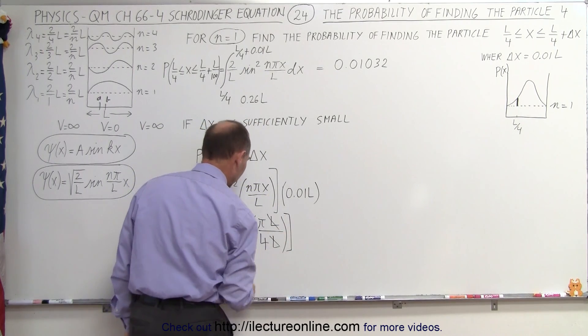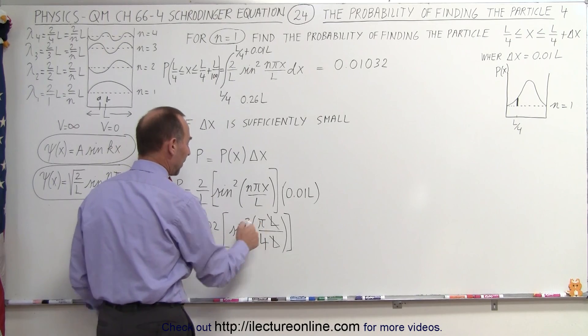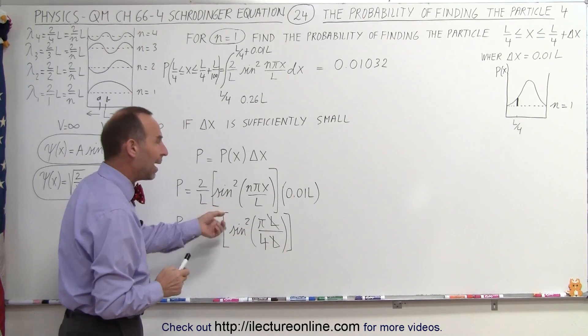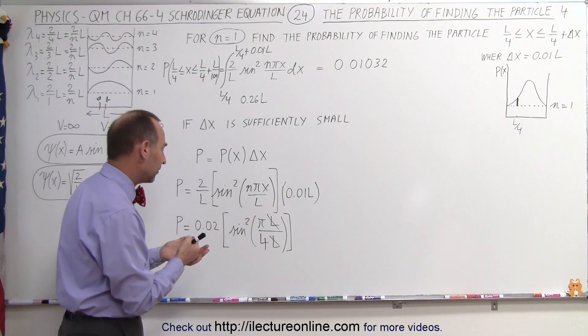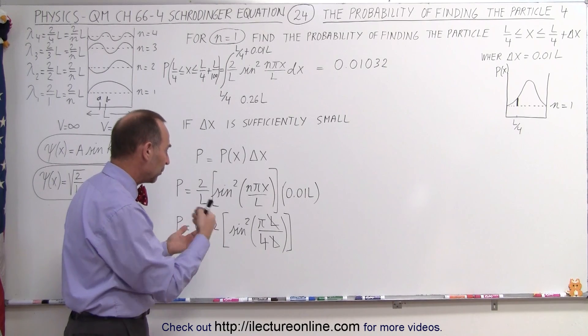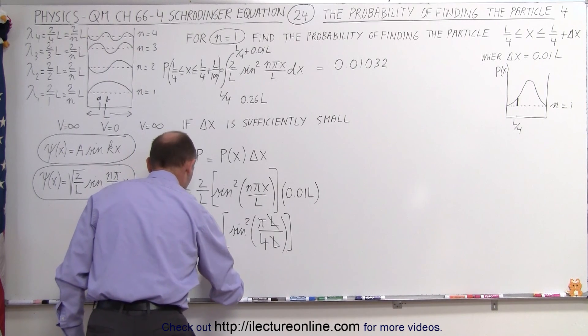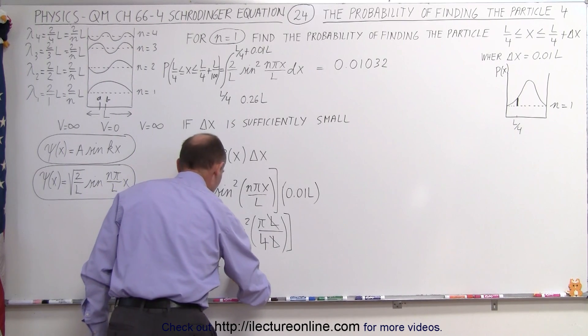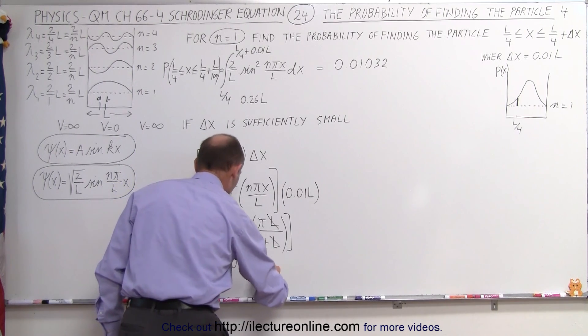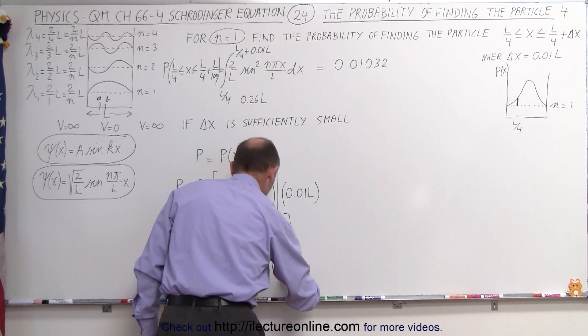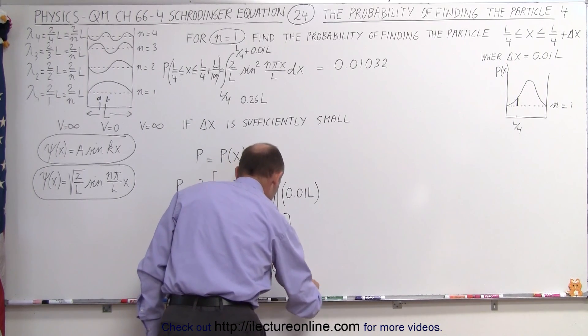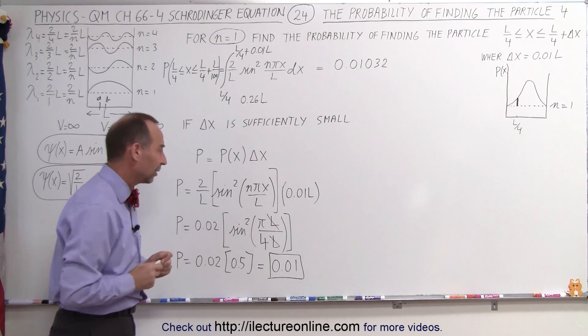The L's cancel out. And now we have the sine squared of pi over 4. Now pi over 4 is 0.707, if we take the sine of that. And when we square it, we get 0.5. So here we say that P is equal to 0.02 times 0.5, which is 0.01. That will now be the probability at that particular location.